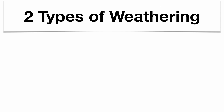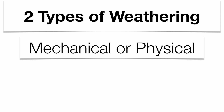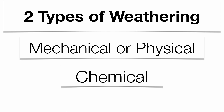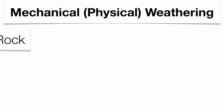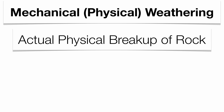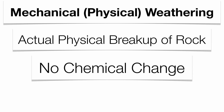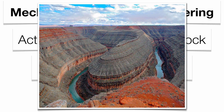There are two types of weathering, and we're going to focus on the mechanical or physical aspect of the weathering process. There's also chemical weathering, which will be covered in a completely separate podcast. Mechanical or physical weathering is the actual breakup of rock — you change the size and shape, but there is absolutely no chemical change whatsoever with the rock.